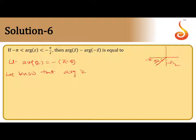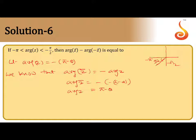We know that arg(z̄) = -arg(z). Therefore, arg(z̄) = -[-(π - θ)] = π - θ. So arg(z̄) = π - θ. We hold this as equation 1.